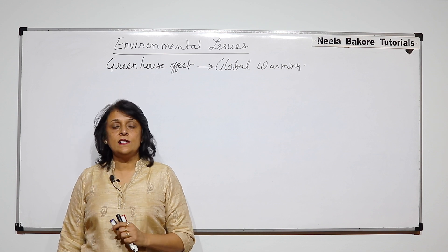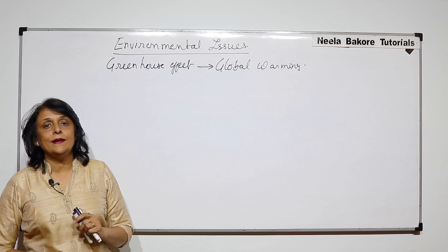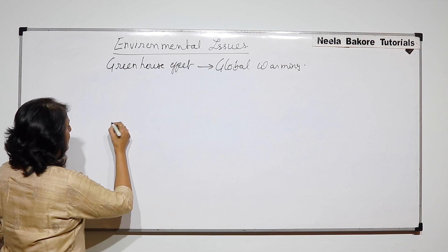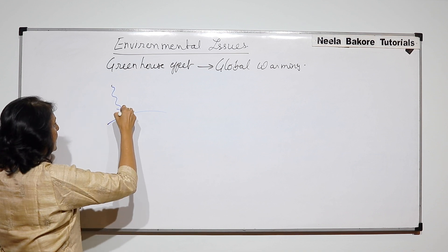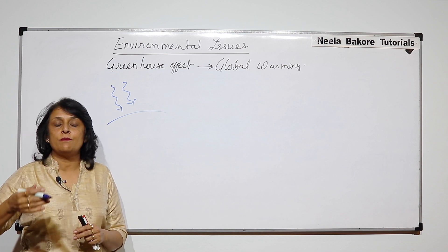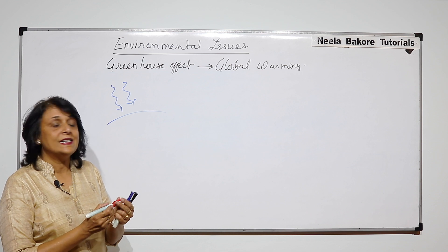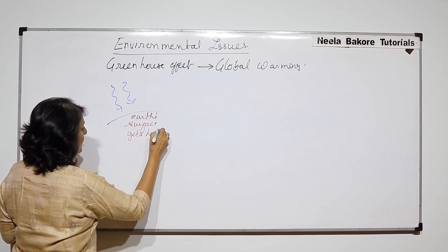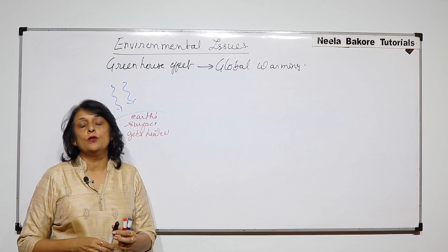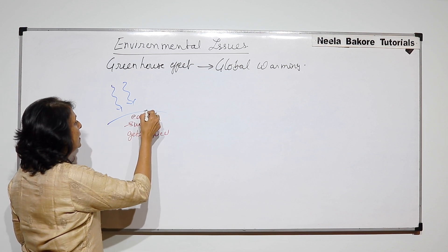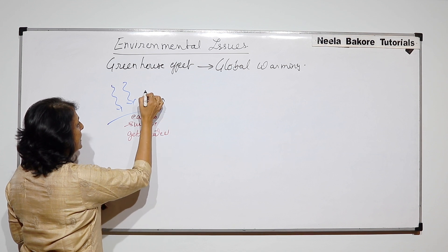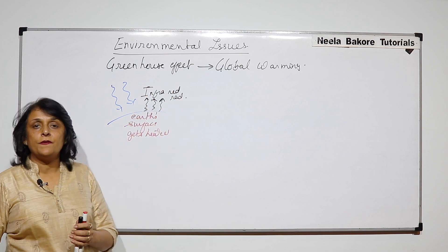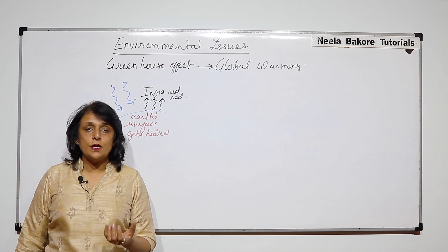What exactly is the greenhouse effect? To understand this, consider solar radiation falling on the earth's surface. Sunlight enters into earth's atmosphere and falls on the surface — the earth's surface gets heated. Now this is a universal thing: any hot object releases infrared radiations. So when sunlight falls on the earth's surface, the surface gets heated and emits infrared radiation.